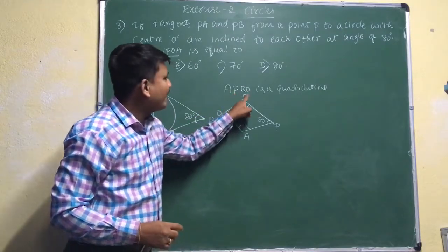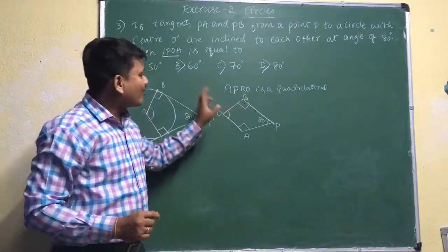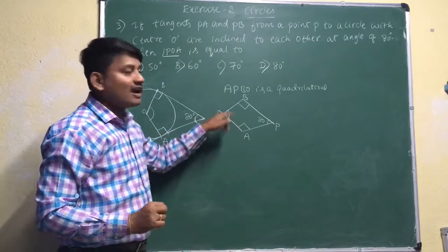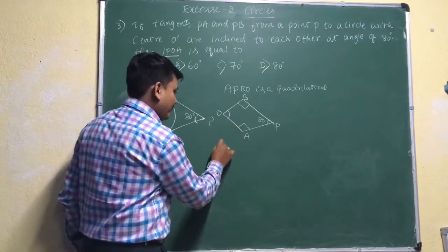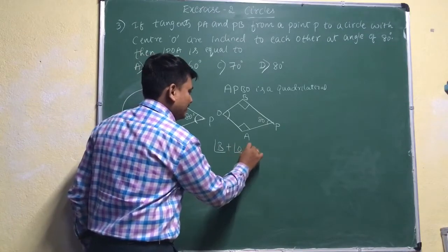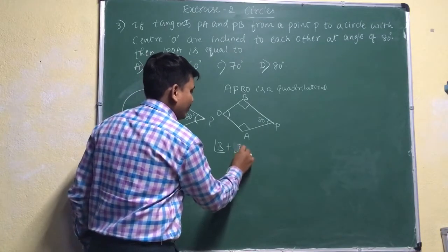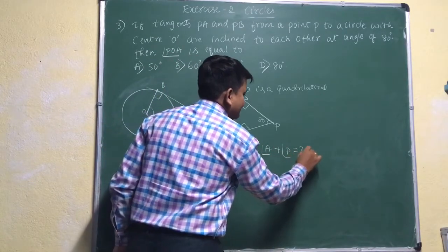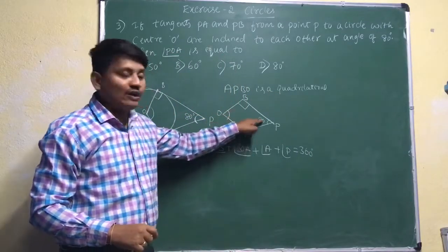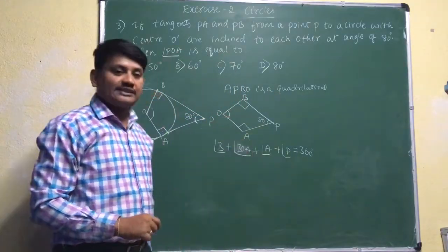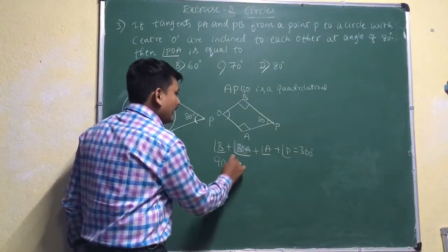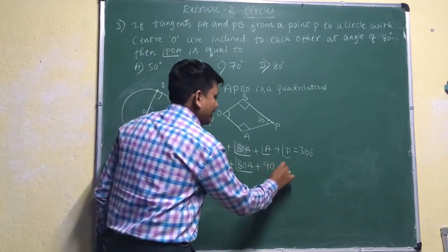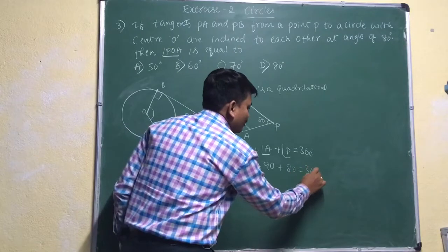I need to find this angle. Since APBO is a quadrilateral, the sum of interior angles is always equal to 360 degrees. So, angle B plus angle BOA plus angle A plus angle P equals 360 degrees. Angle B is 90 degrees, angle A is 90 degrees, and angle P is 80 degrees.